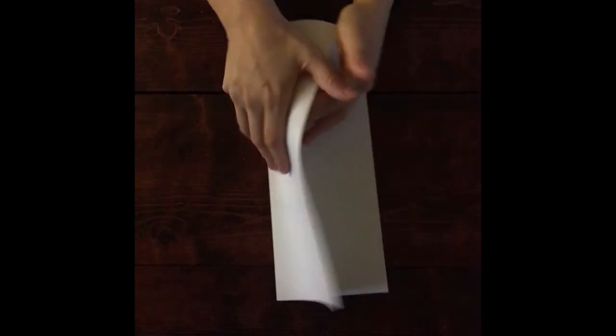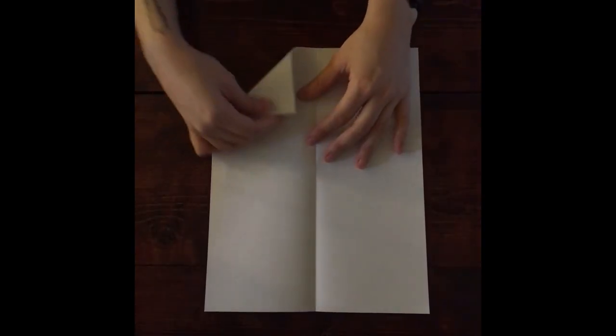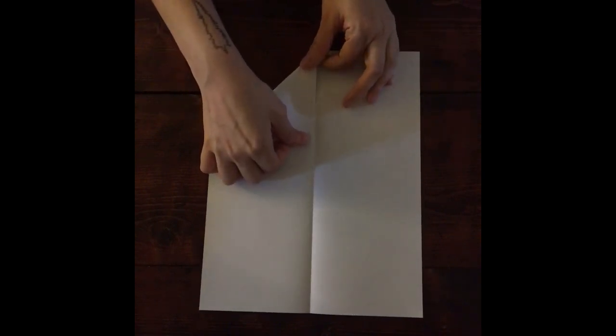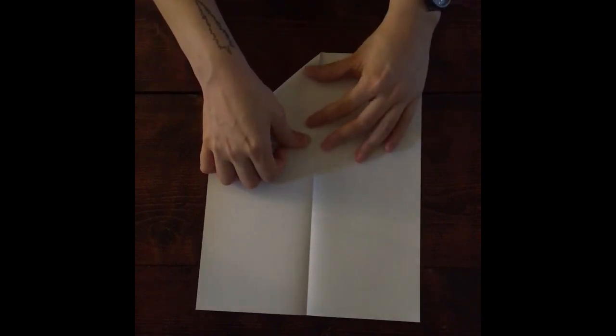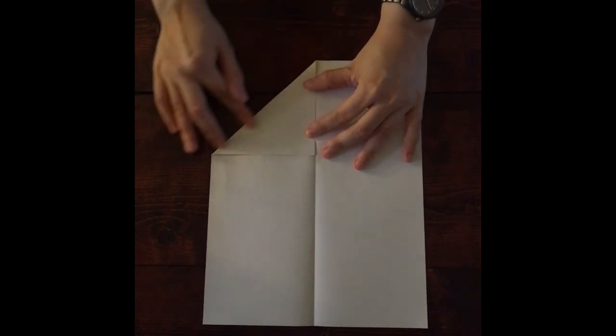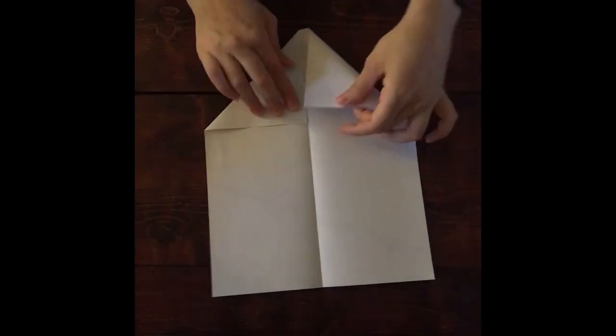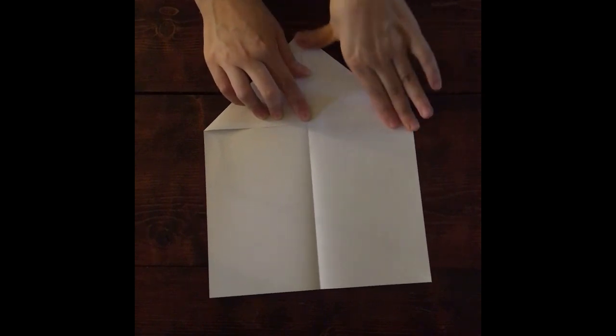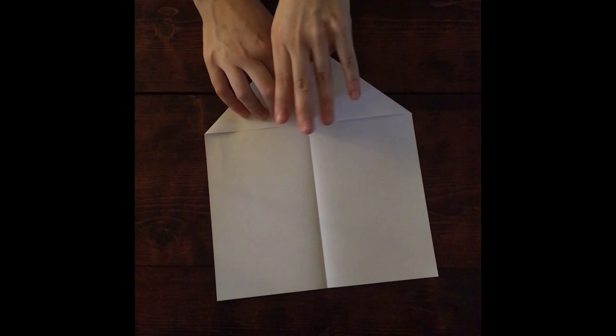Next you're going to want to unfold the paper. We're now going to fold two of the corners so they meet at the crease you just made in the middle. Again, make sure your folds are crisp, and if you need to make any adjustments for accuracy as you go, feel free to do so.